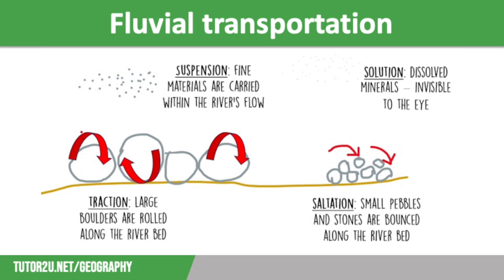The second process is saltation. In the upper course we also find saltation, where small pebbles and stones are bounced along the riverbed, as shown in the diagram. They are bounced along as they get lifted and dropped with the rise and fall of the water's velocity. As we move further down the river into the middle and lower course, the material being transported is much smaller as it has been eroded much more.